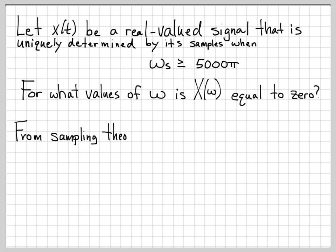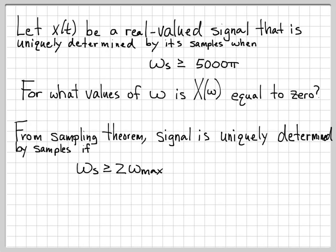So this basically boils down to knowing the sampling theorem. The sampling theorem tells us that a signal is uniquely determined by its samples if we are sampling at a rate greater than or equal to 2 times the maximum frequency of the signal.